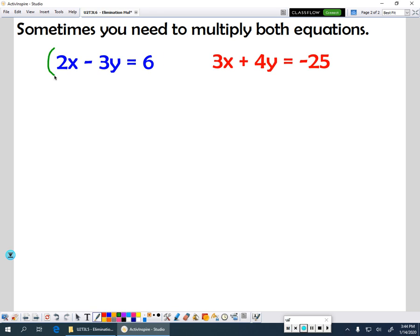If I look at this first equation, in order to make this y value of 12, I'm going to multiply by 4. So 2x times 4 is going to give me 8x. And then 4 times negative 3 will give me negative 12y. And then 4 times 6 will give me 24.